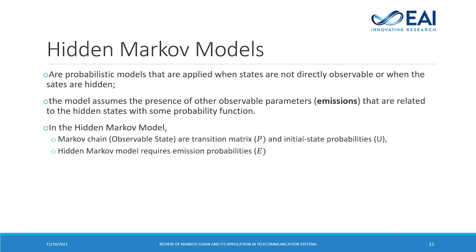Hidden Markov models are statistical models applied when states are hidden. The model assumes the presence of other observable parameters, called emissions, which are related to the hidden states having a certain probability. In addition to the transition matrix and the initial state property, denoted as P and U respectively, the Hidden Markov model adds another term — the emission probability, denoted as A.